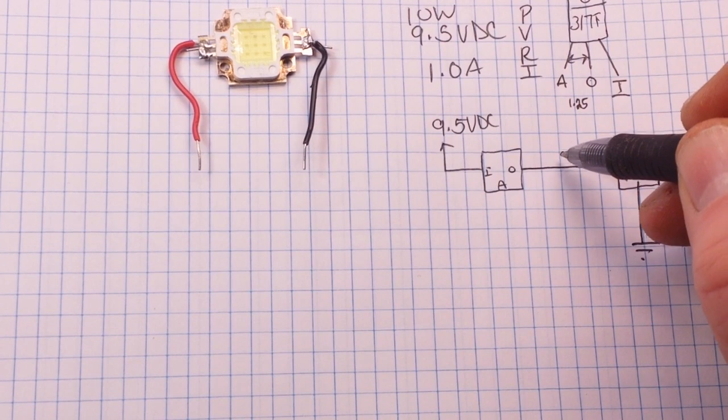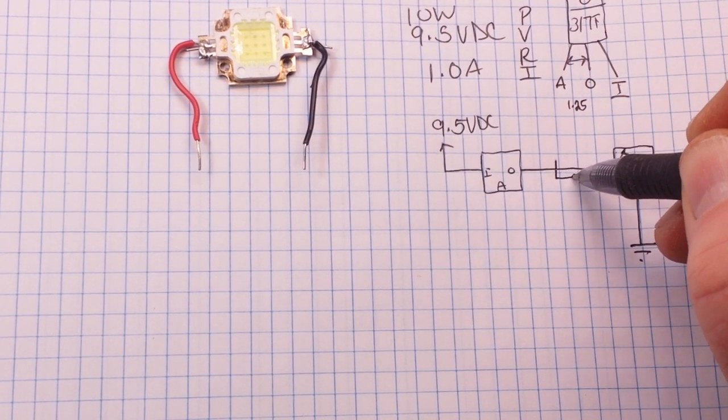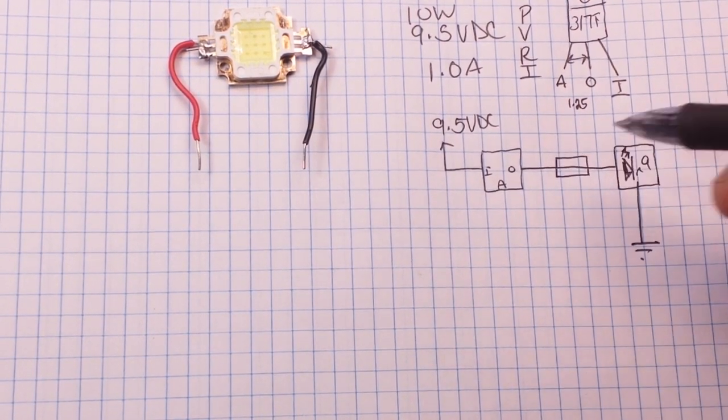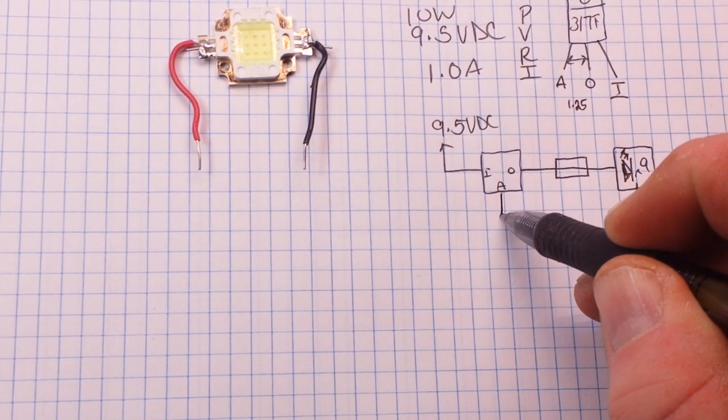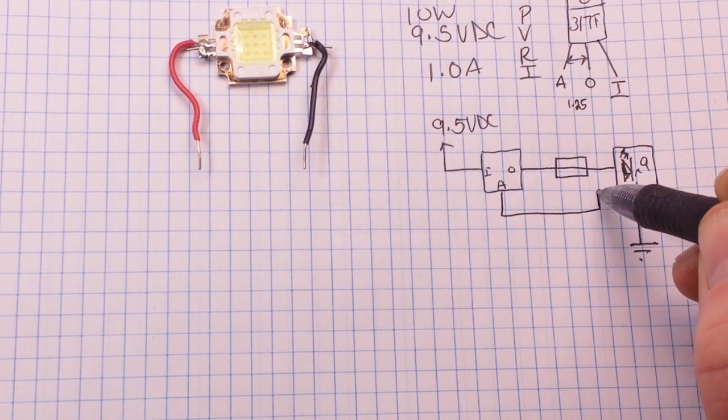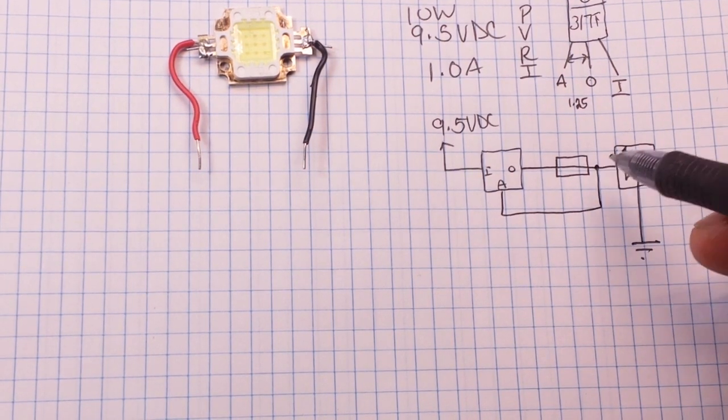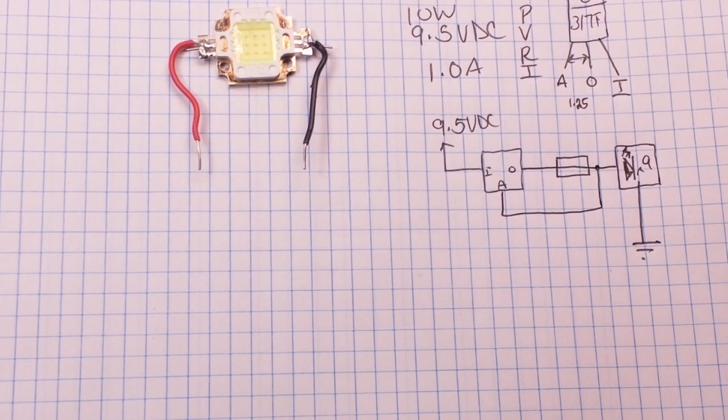Now what we have to do here is put a resistor in the middle here, and then run our adjust between the resistor and our load.